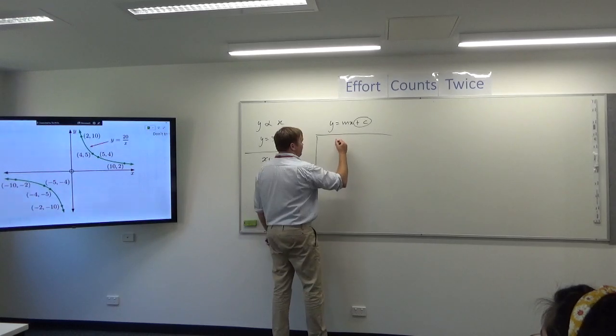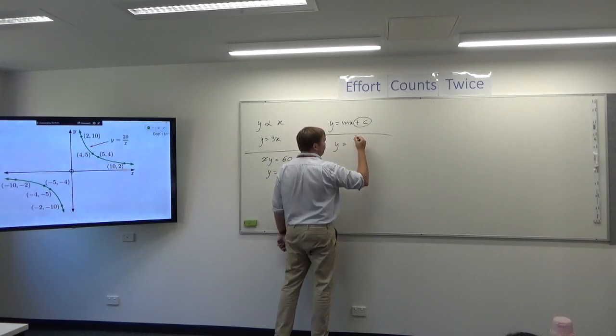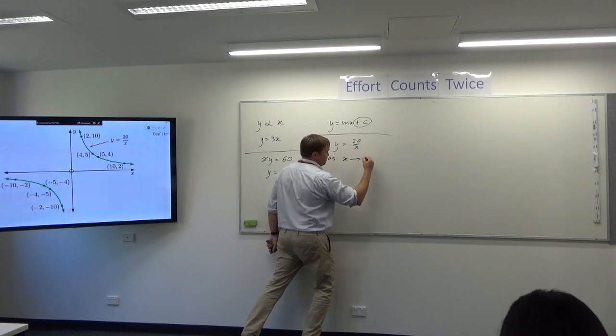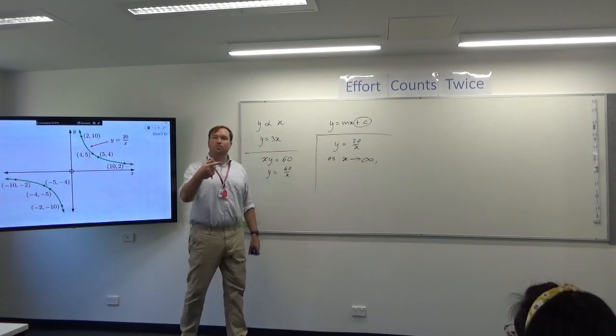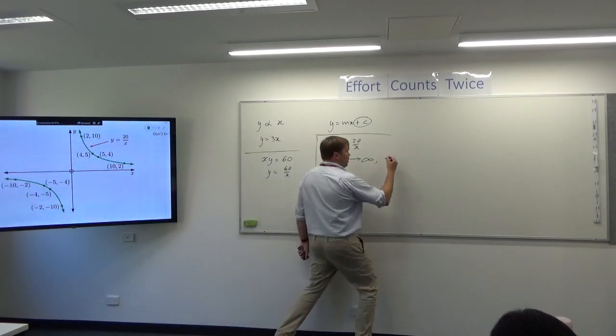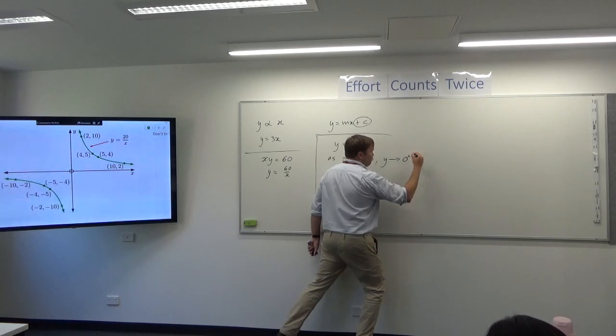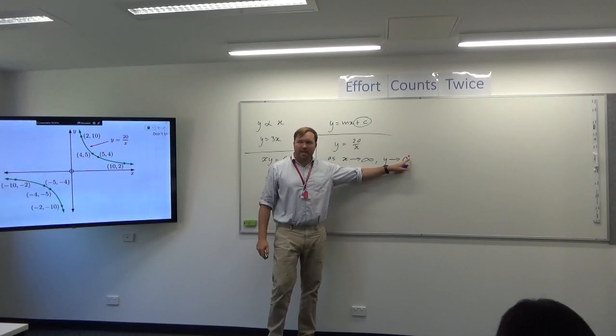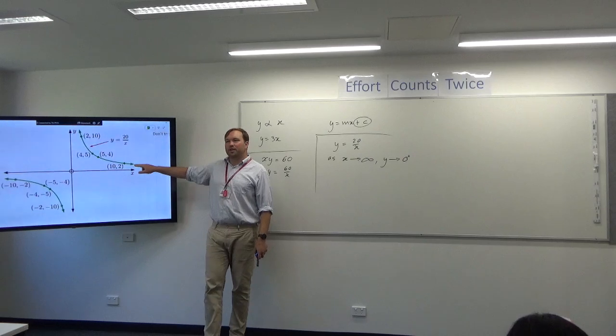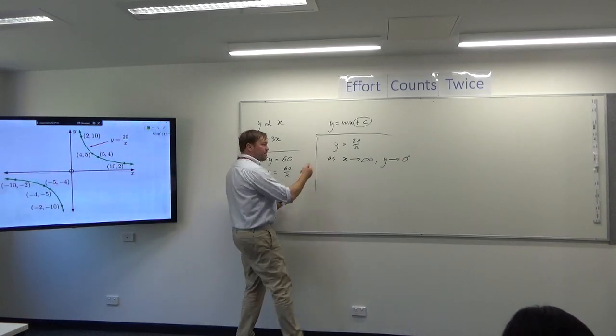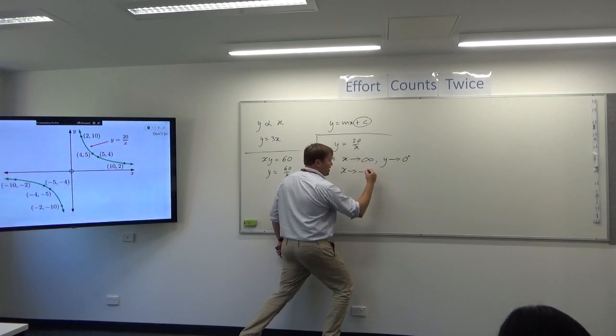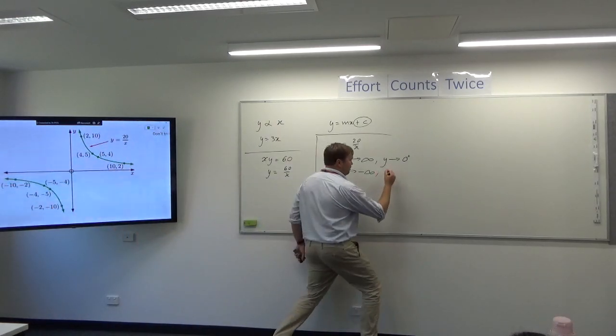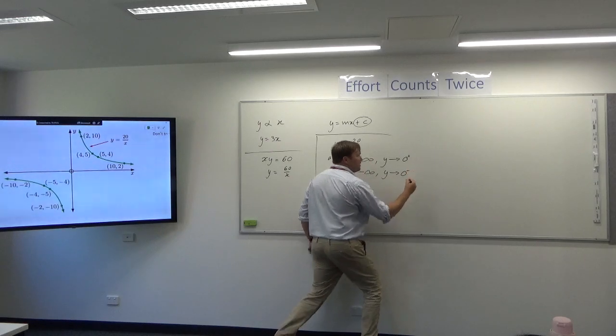And there is a sort of special language we use around this that you may have come across last year. So if we had, say, y equals 20 on x, we would say that as x approaches infinity, so that's as x gets really, really large, y approaches zero from above. And it's this little positive sign you may not have seen before. What I'm saying is that the graph gets close to zero and we're approaching it from above.